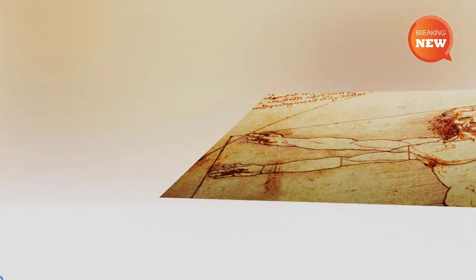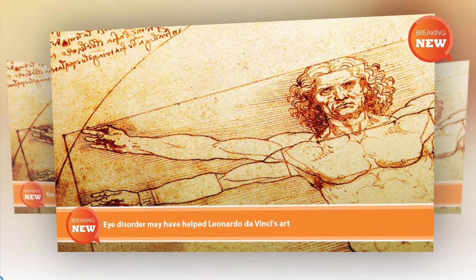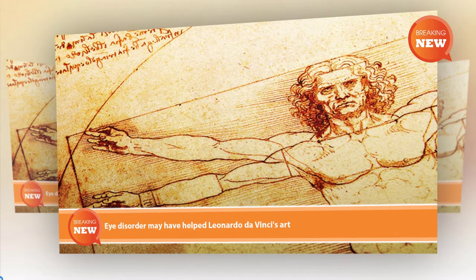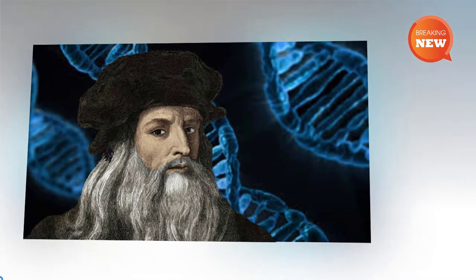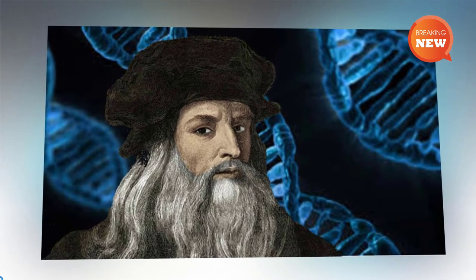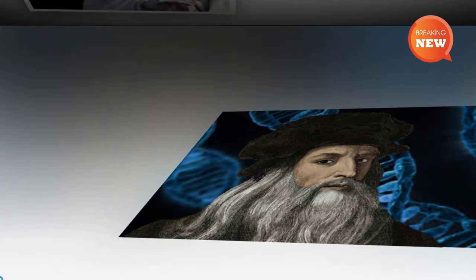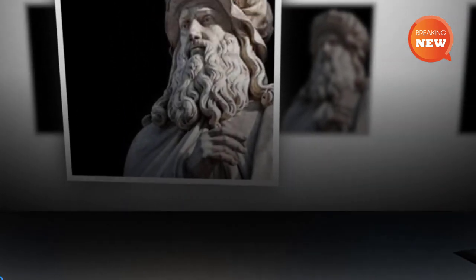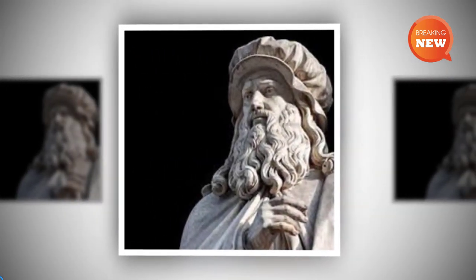City University of London professor Christopher Tyler, who conducted the research, said several great artists, from Rembrandt to Picasso, are thought to have had strabismus, and it seems da Vinci had it too. The condition is rather convenient for a painter, since viewing the world with one eye allows direct comparison with the flat image being drawn or painted, he said.